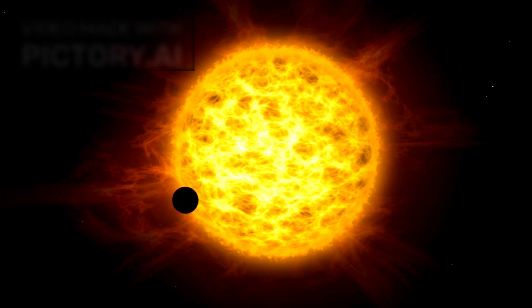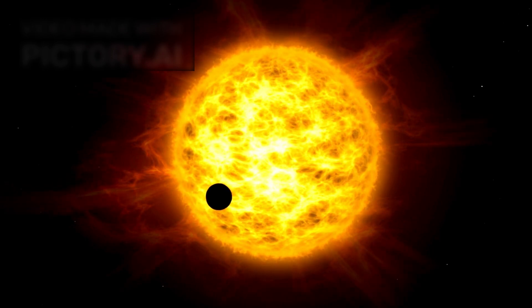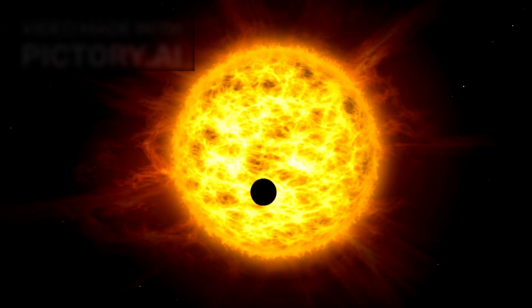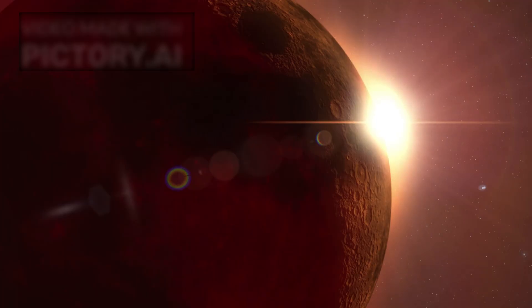This was made possible by observing the exoplanet as it transited its host star, passing directly in front of it from our point of view. During these transits, a small fraction of the starlight filters through the planet's atmosphere before reaching Earth, leaving behind spectral traces of the gases it encounters.